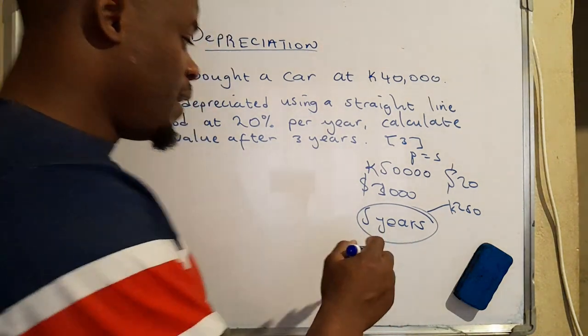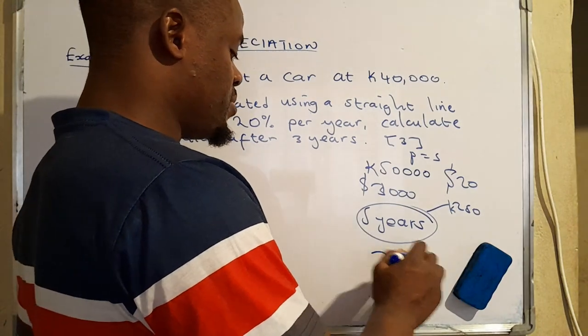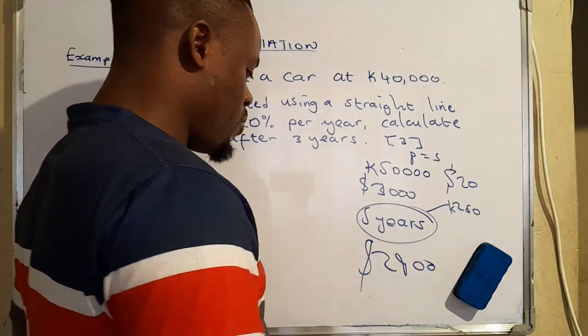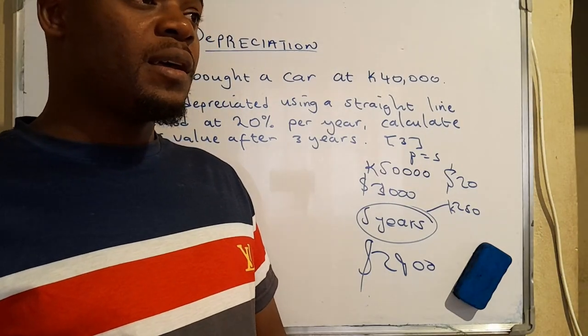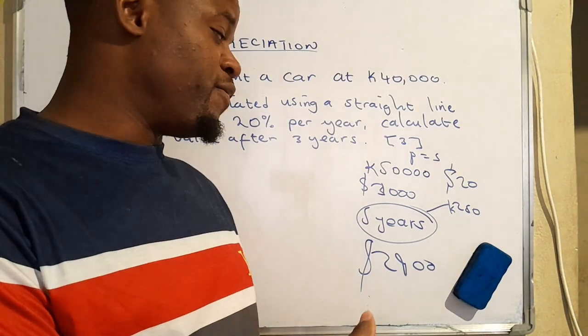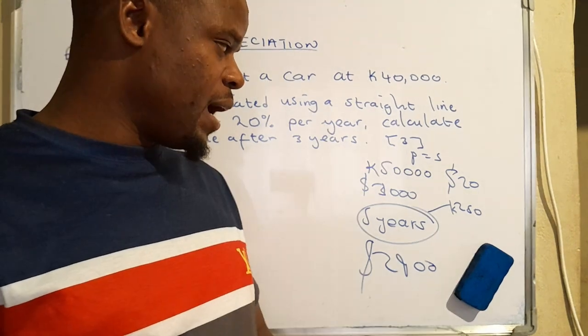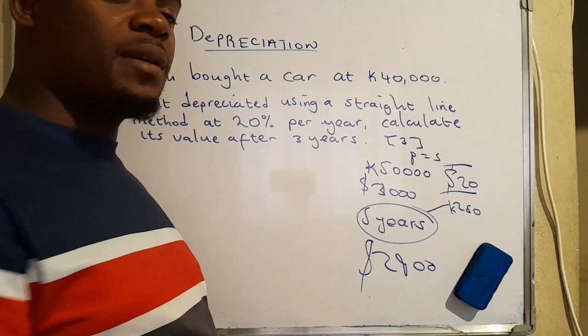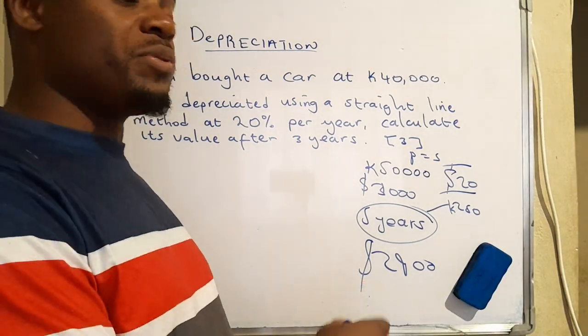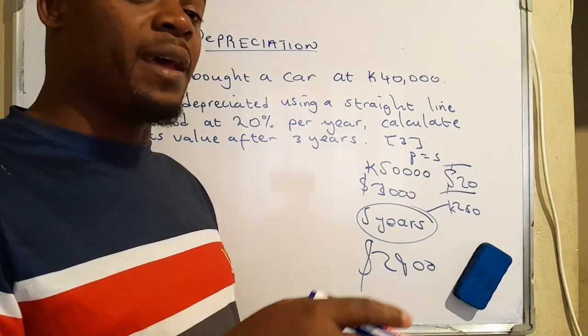You're going to have two thousand nine hundred US dollars. Now this two thousand nine hundred US dollars will actually be the value of that asset after losing some certain value. And if we say it's losing 20 US dollars, it's depreciating with 20 US dollars a year.